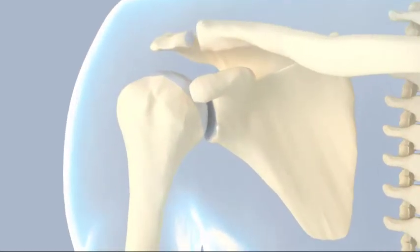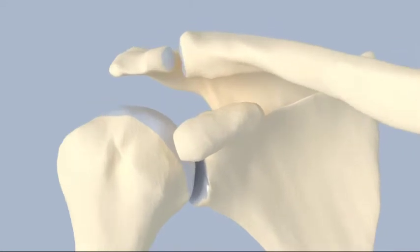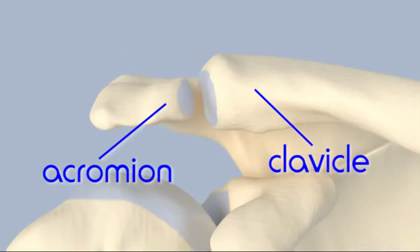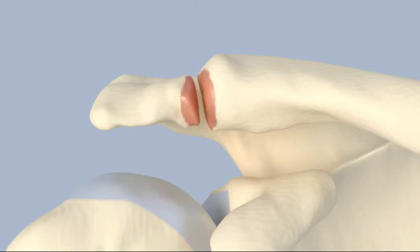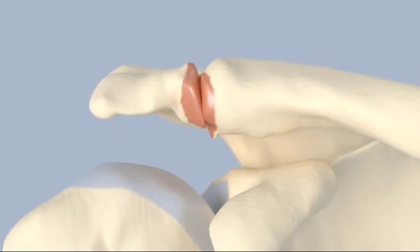Acromioclavicular arthritis is a condition in which the cartilage that caps the ends of the bones where the acromion and clavicle meet is damaged and worn away. This allows the bones to grind together at the acromioclavicular joint.